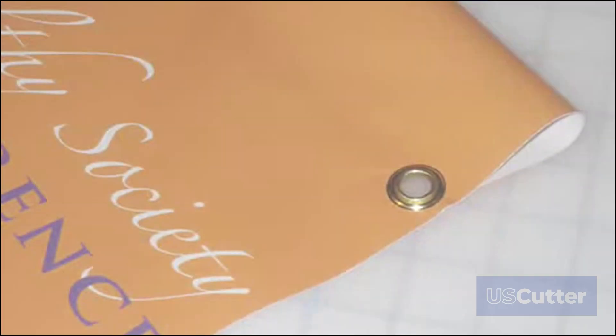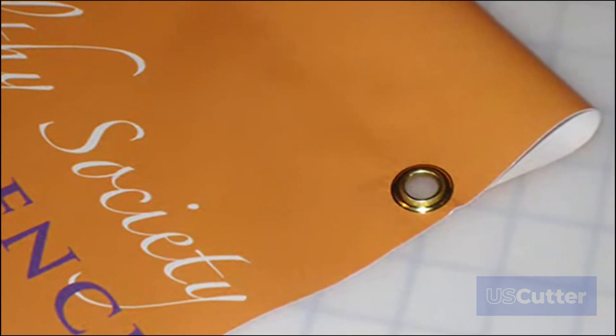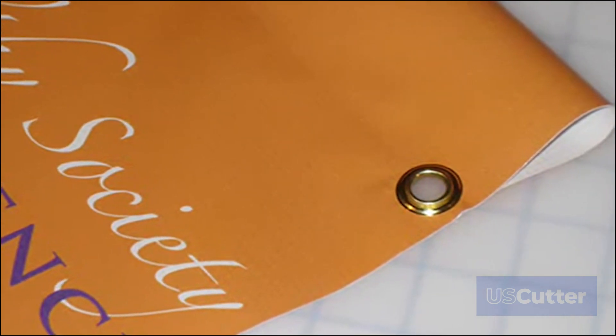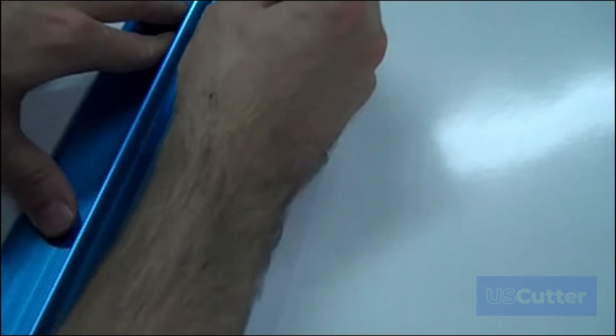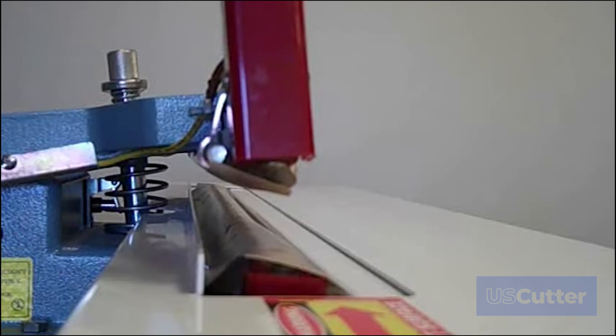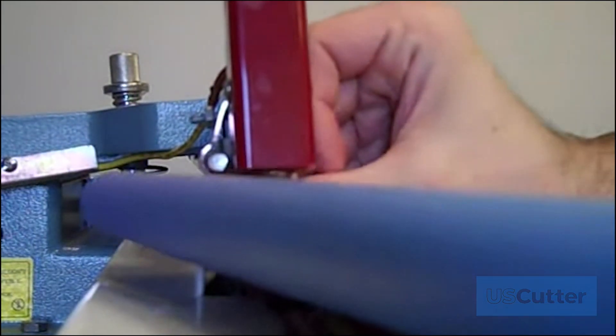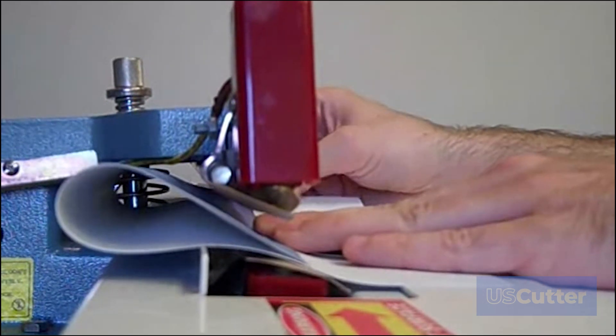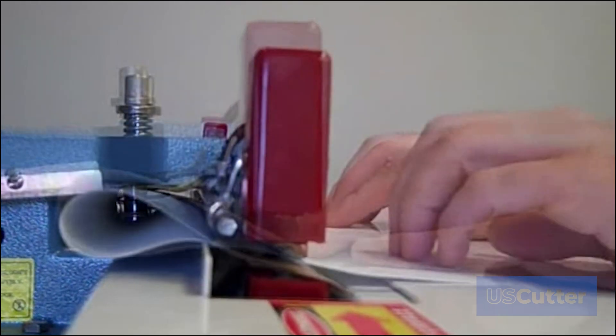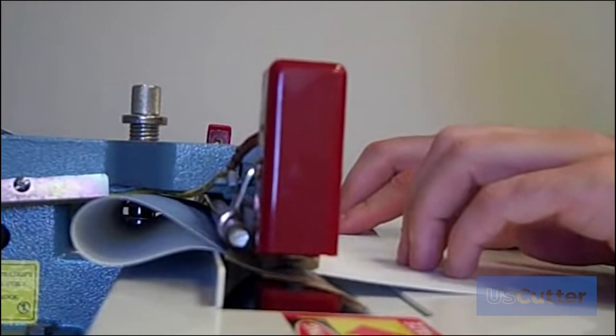Pole pockets are another easy product to fabricate with the Banner Pro and can add versatility to your banner designs. To create a pole pocket, draw a line on the inside of the banner material parallel to the banner edge. Feed material over the alignment bar so that the heating element is a quarter inch inside the folded banner. Once your alignment is set, press on the foot pedal and weld the pocket securely.